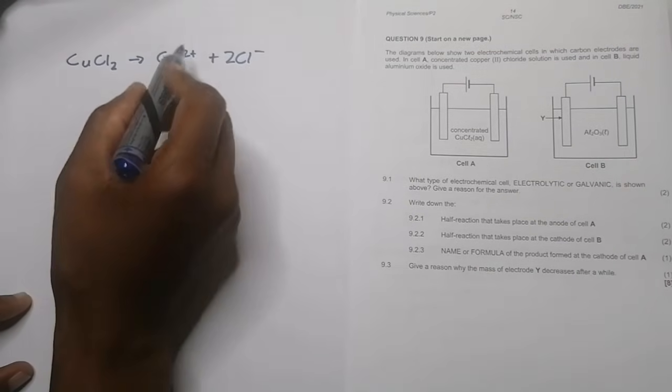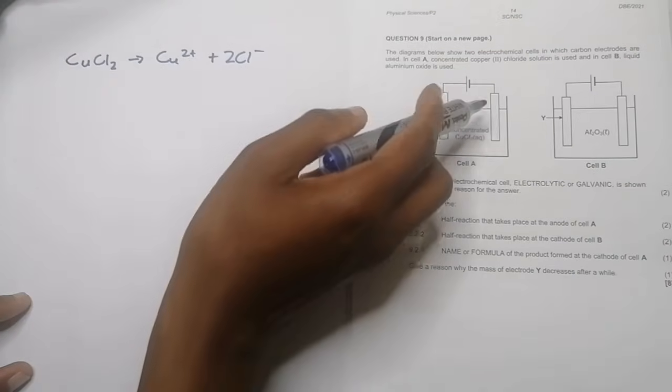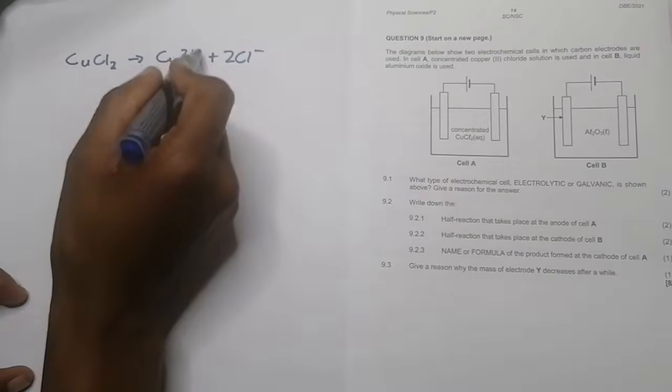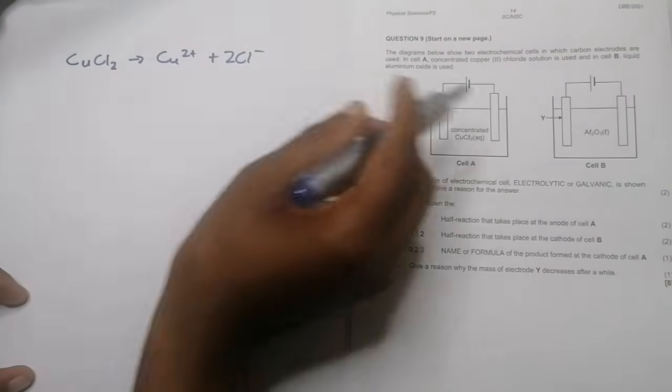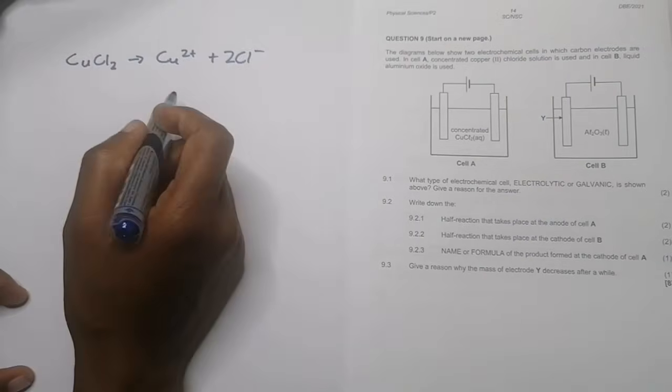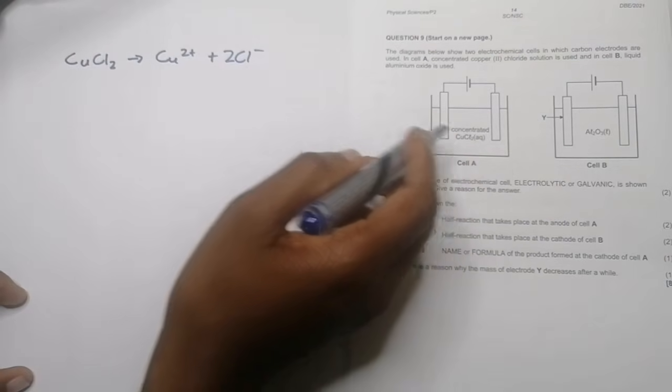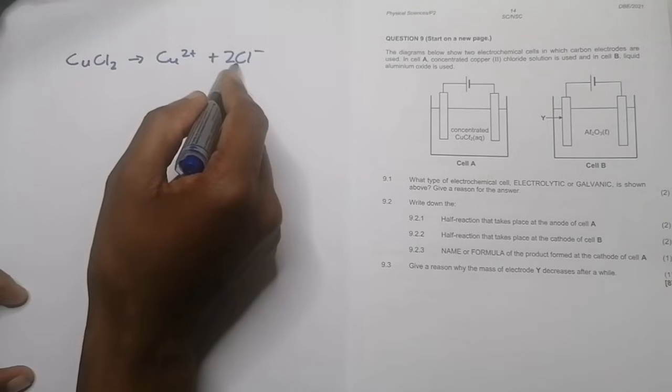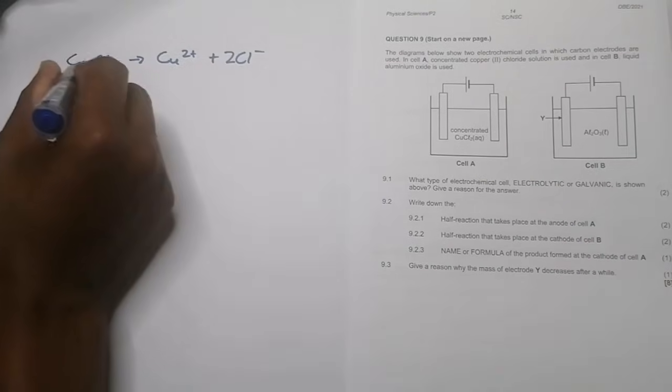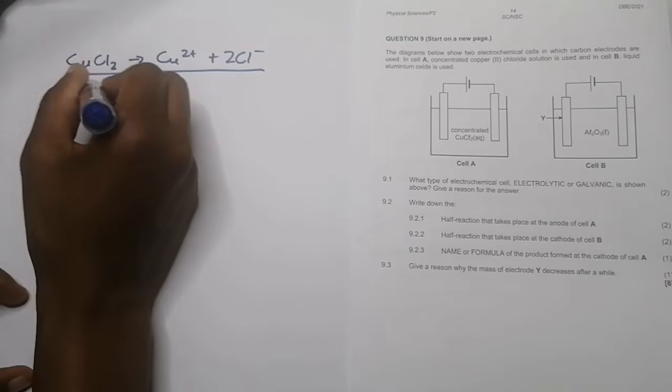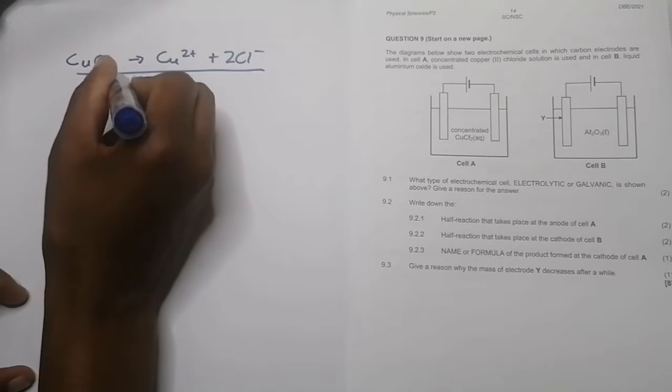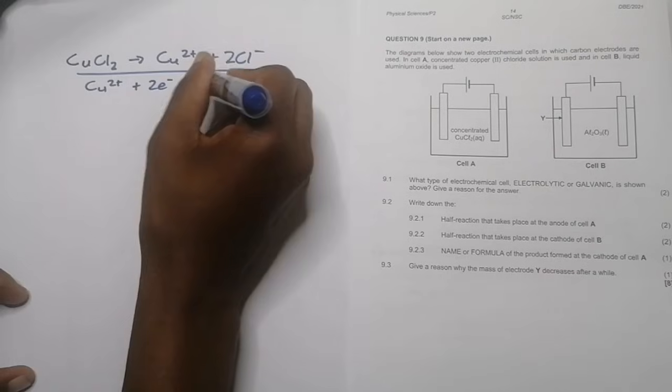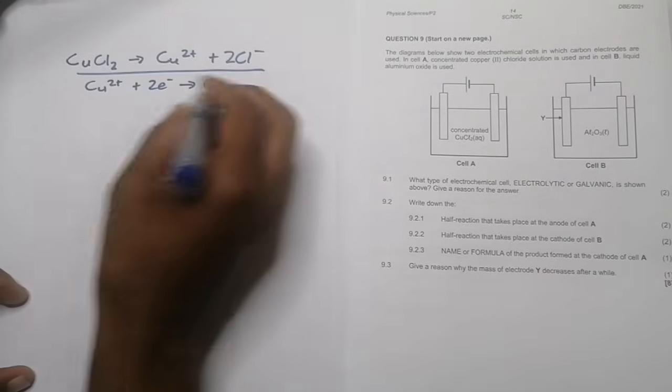Obviously copper two plus would actually tend to go to the negative part of the cell. Remember, it's positive ions that are attracted by the negative charges, the electrons there. And in this case, of course, chloride ions. So essentially what's going to happen to copper is that Cu²⁺ is going to receive electrons when it goes to the negative part of the cell and become copper. It undergoes reduction in this case.